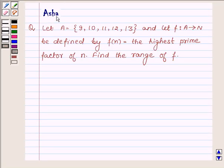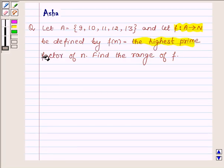Hi and welcome to the session. I am Asha and I am going to help you with the following question which says: Let A be a set having elements 9, 10, 11, 12, and 13, and let f be a function from A to N defined by f(n) equals the highest prime factor of n. Find the range of f.